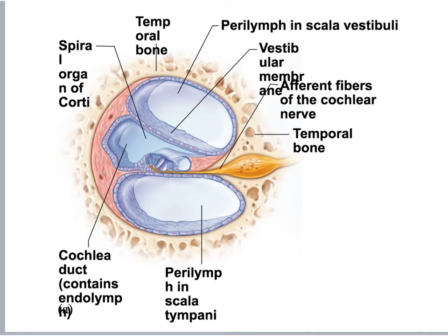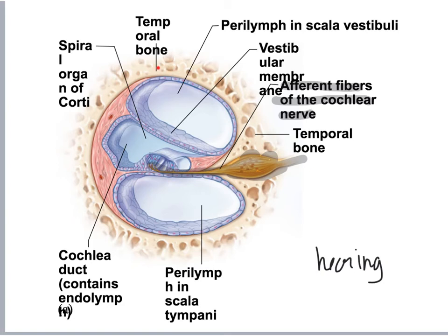There is a space inside the temporal bone, and here are the afferent fibers of the cochlear nerve, which are important for the sense of hearing. The cochlea is filled with perilymph in the vestibular portions. You have the vestibular membrane, and the spiral organ of Corti is filled with fluid. The cochlear duct contains endolymph. There are cells at the end of this structure that attach to the cochlear nerve.